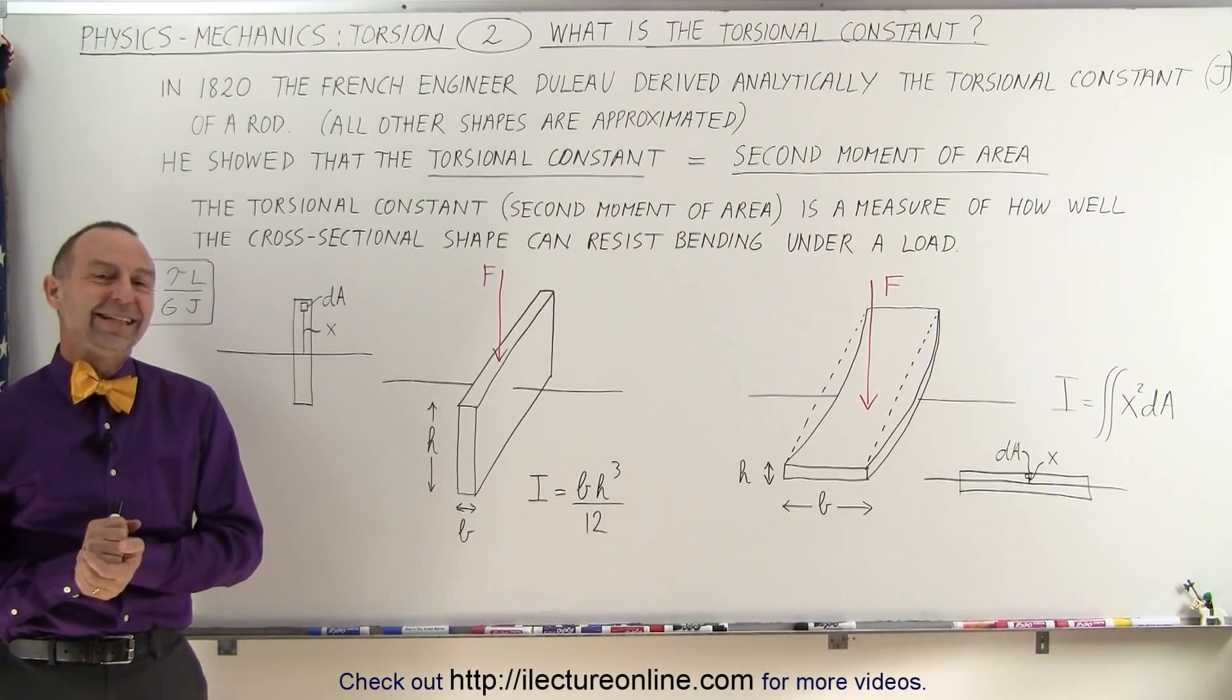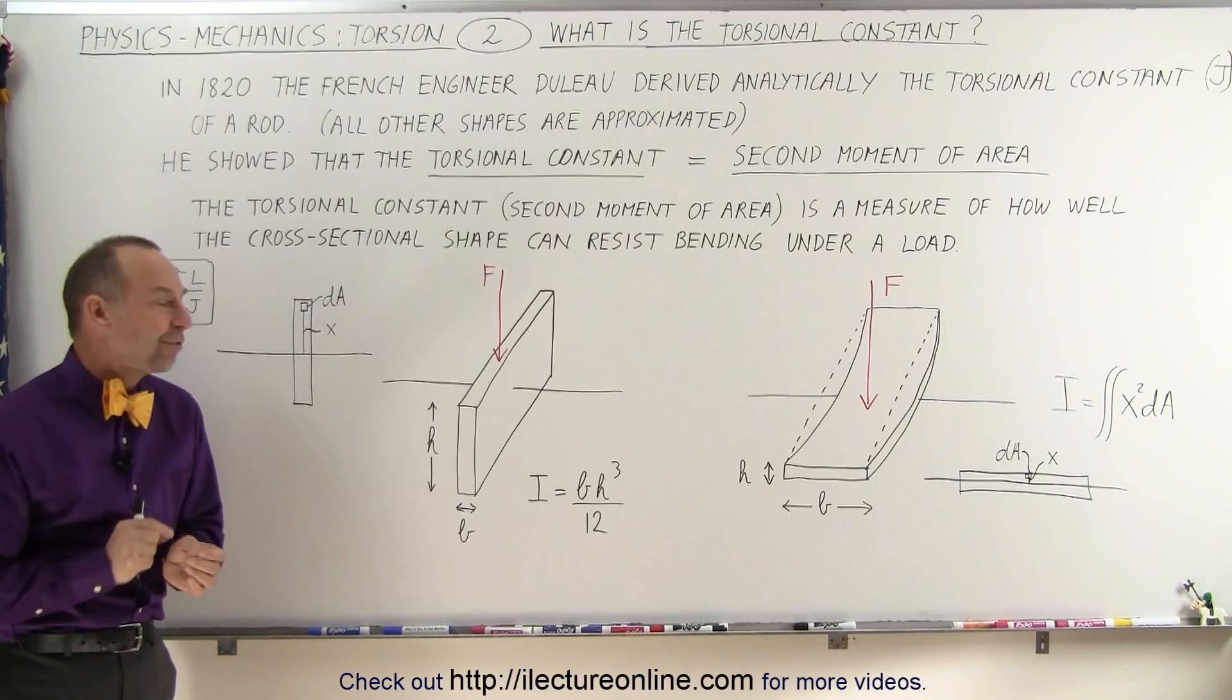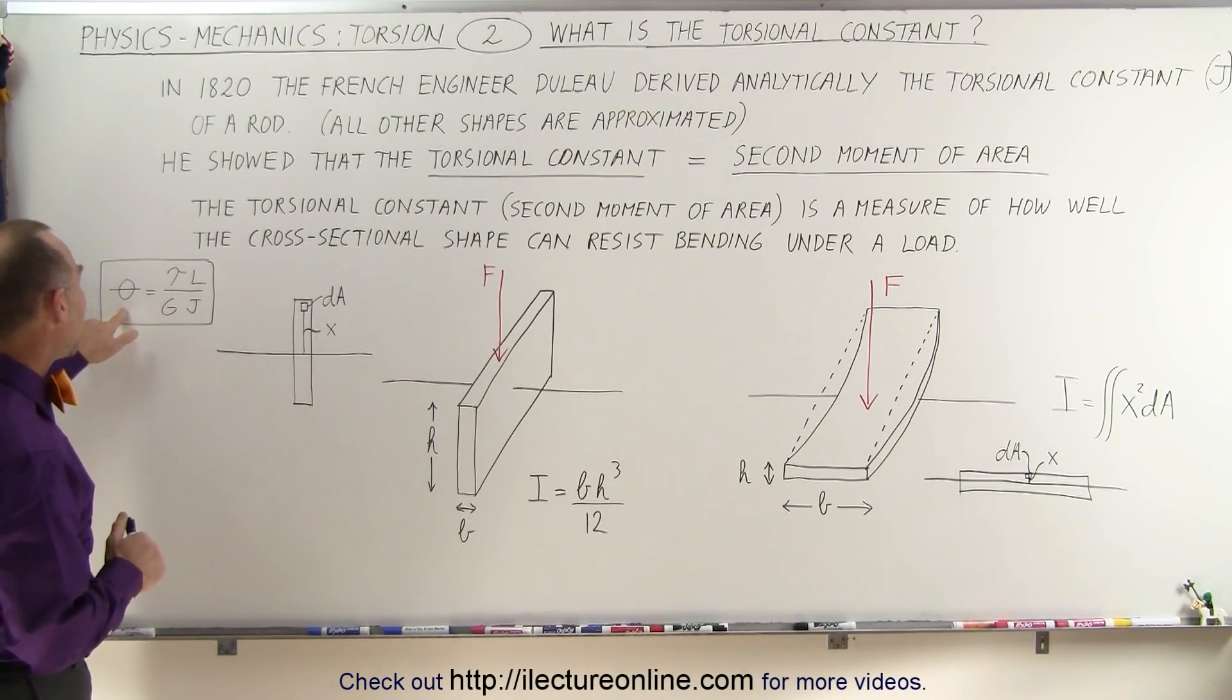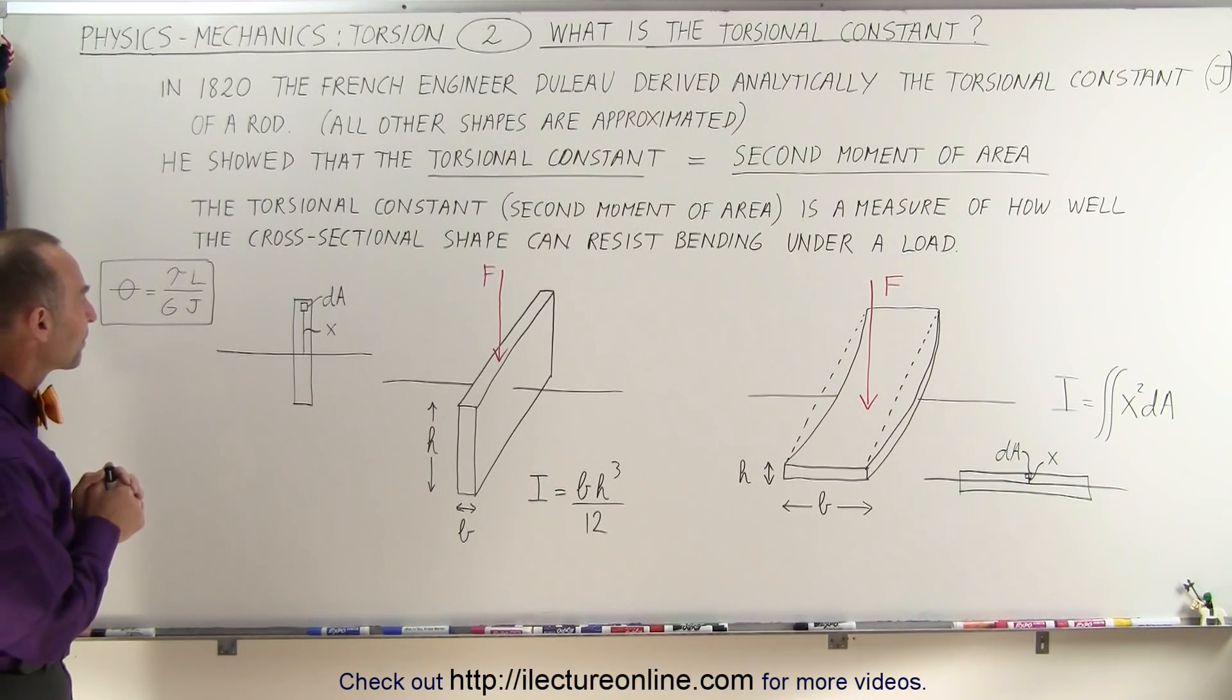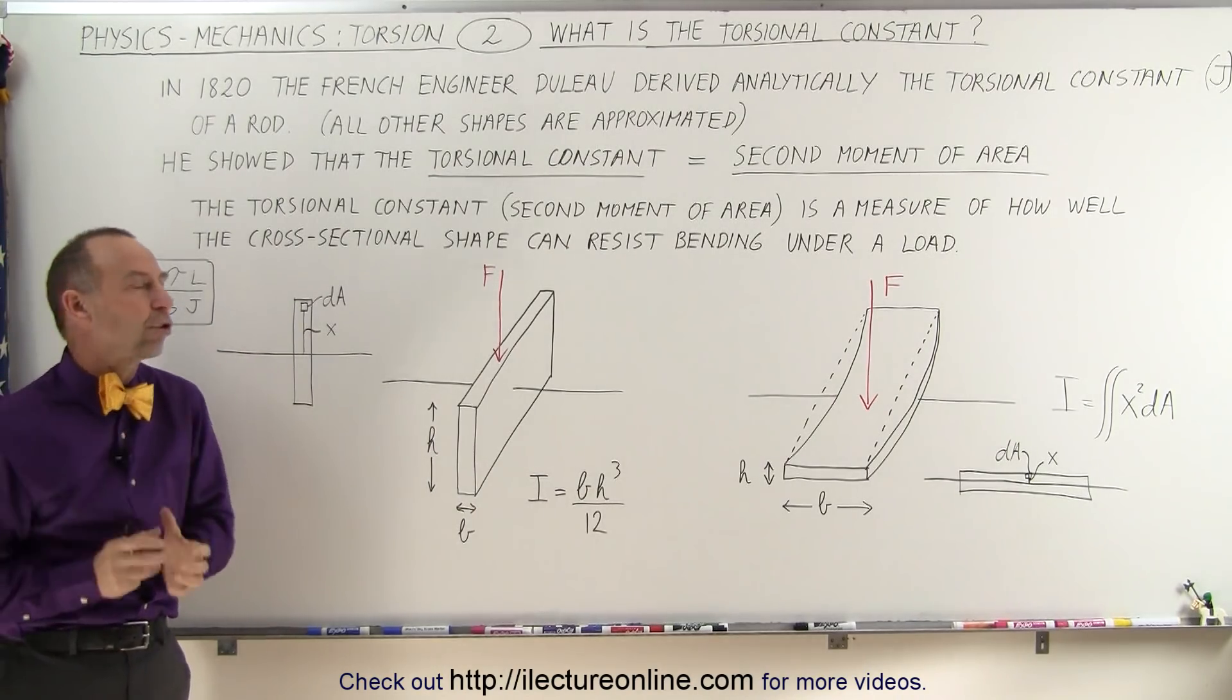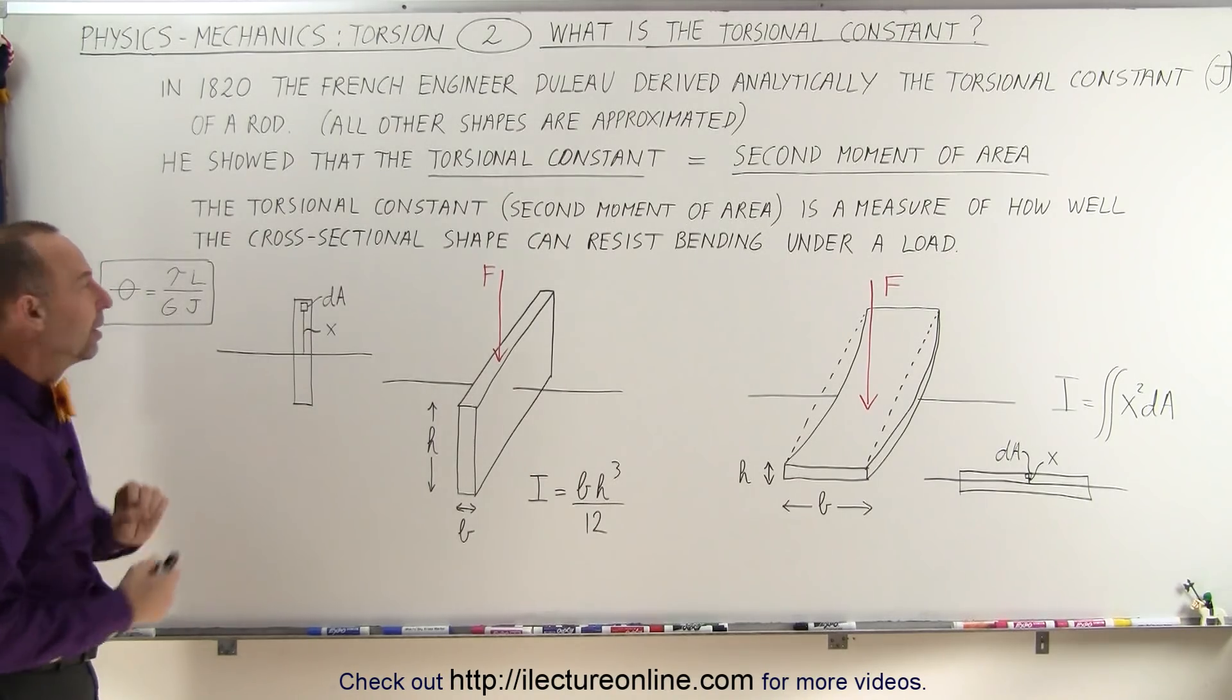Welcome to Electron Line. Now let's talk about the torsional constant. In the previous video, we talked about the twist angle being the product of the torque times the length of the rod divided by the rigidity modulus and what we call the torsional constant J. But what is that? What really is the torsional constant J?